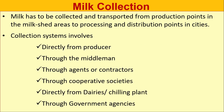Milk has to be collected and transported from production points in the milkshed areas to processing and distribution points in cities. Collection systems include: directly from producer, through middlemen, through agents or contractors, through cooperative societies, directly from dairies or chilling plants, and through different government agencies.